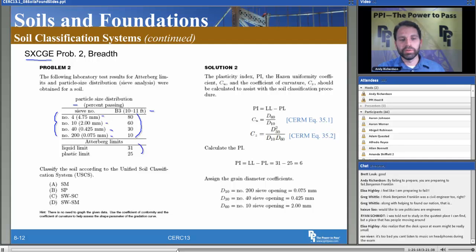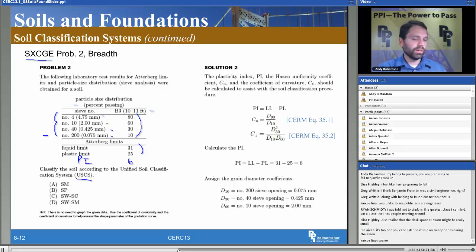Here's our Atterberg limits: LL of 31 and a PL of 25. So we could calculate our PI is going to be the difference between those two numbers, which would be six. We'll go ahead and calculate that real quick as well. They want us to calculate it based on USCS. Okay, so first thing we're going to need to know is the F 200 and is it coarse grain or fine grain.